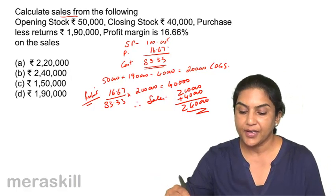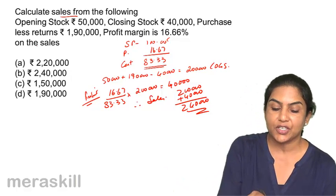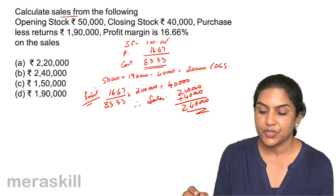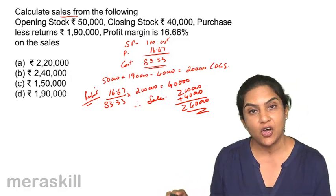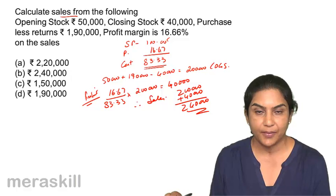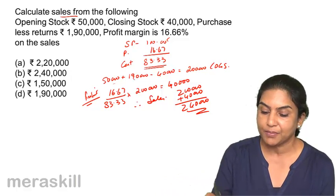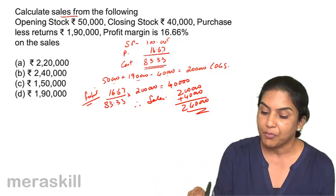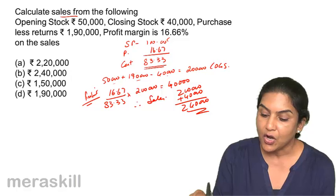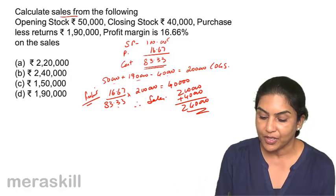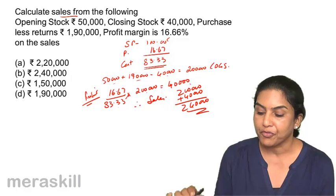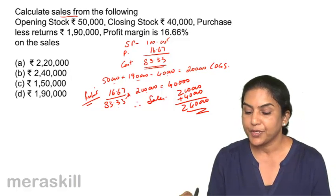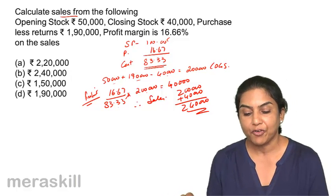So selling price is 100. Profit margin is 16.67% on sales. If selling price is 100, profit is 16.67, which means cost is 83.33. Cost of goods sold is opening stock plus purchases minus closing stock equal to 2,00,000. When cost is 2,00,000, profit is 40,000. Therefore sales should be 2,00,000 cost plus 40,000 equal to 2,40,000.